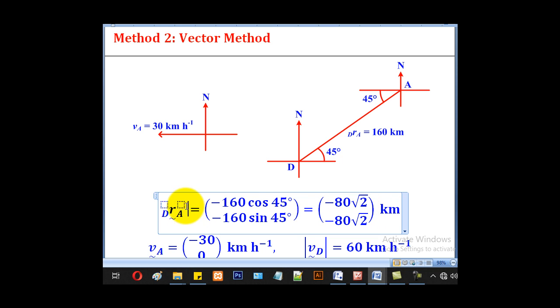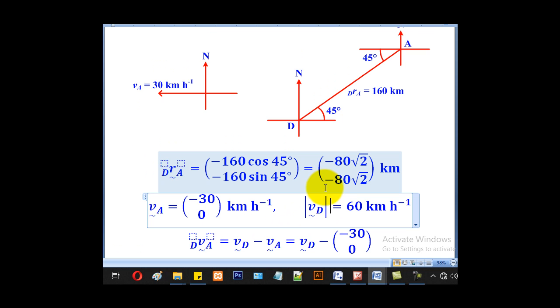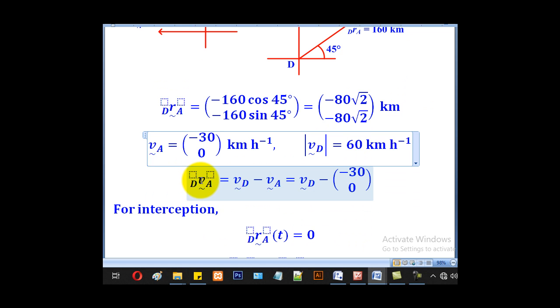That's the relative displacement of the destroyer to the tanker. Now the velocity of the tanker is entirely horizontal, so it will be (-30, 0). For the destroyer, we don't know the direction, but we know its magnitude is 60 km per hour. We know the formula that the relative velocity of D to A is velocity of D minus velocity of A. We don't know the velocity of D, so we shall first leave it there, but we know the velocity of A, so we substitute.